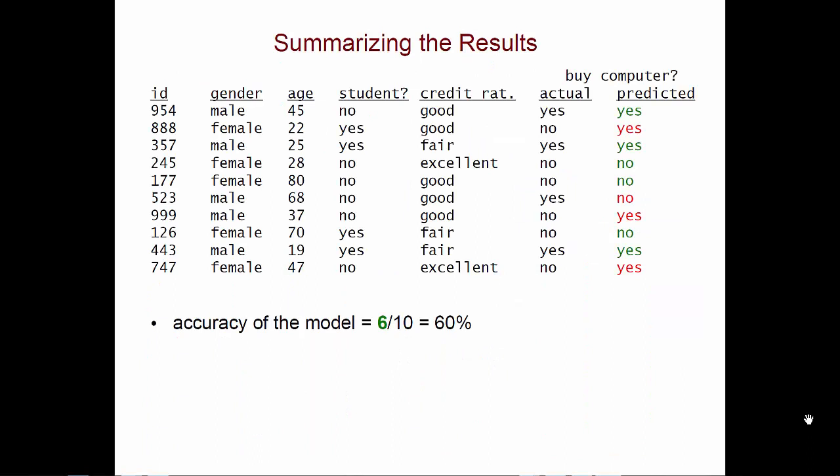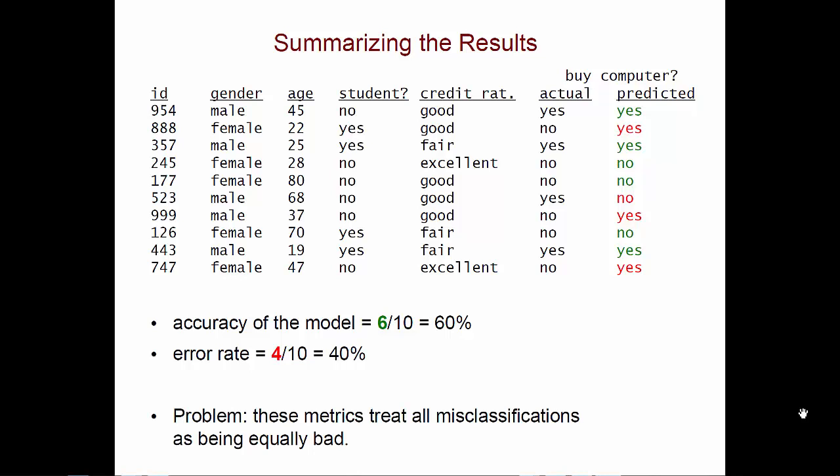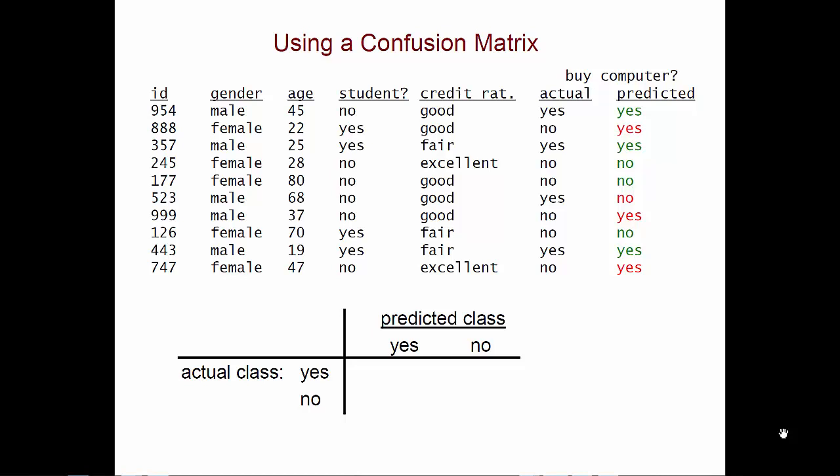One way to summarize how well the model does on these test examples is to say that it has an accuracy of 6 out of 10, or 60%. Because again, out of those 10 examples, it got six of them right. Its prediction matched the actual classification. We can also talk about the error rate of the model. In this case, it's 4 out of 10, or 40%. These two metrics are useful, but they're overly simple. They treat all mistakes that the model makes as being equally bad.